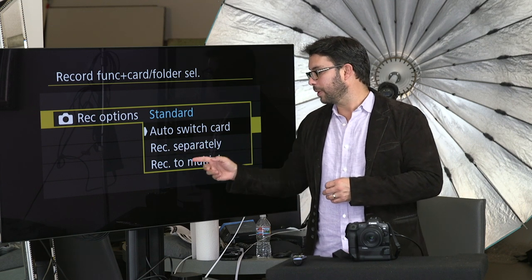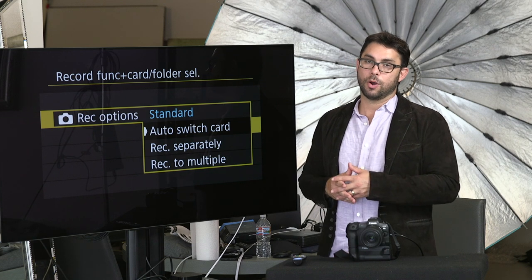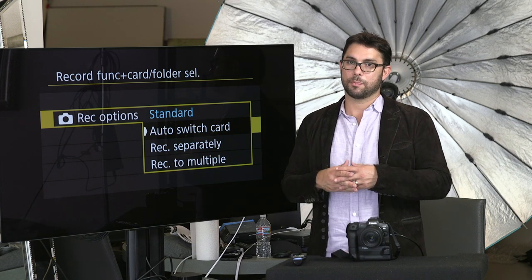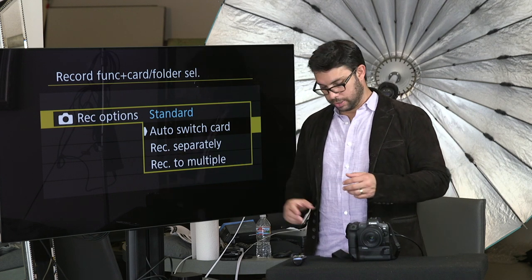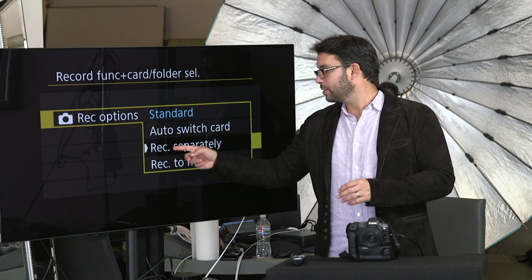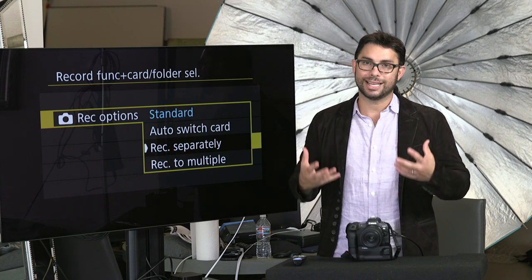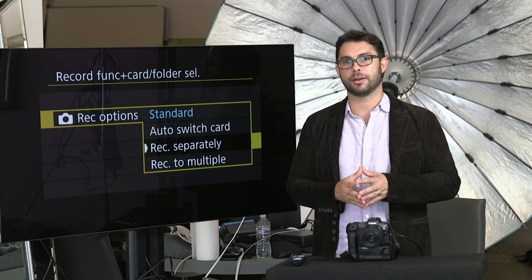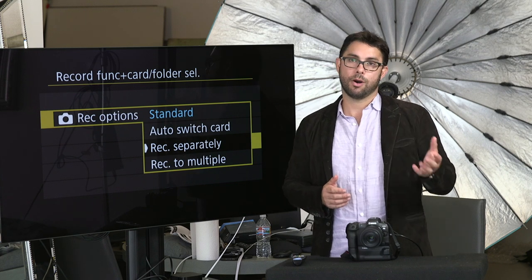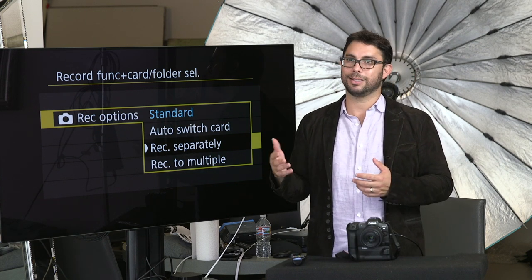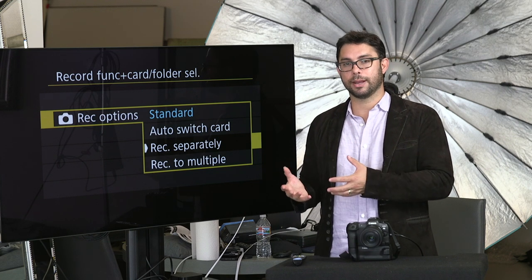Record separately and record to multiple — those are your backup options. Which obviously, if you're a professional photographer, that means a lot. Record separately means that it's going to record two separate formats to the memory cards. So one memory card could be RAW and the other memory card, let's say the SD card, could be your backup and that will be large JPEG.